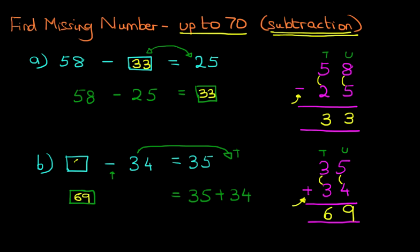And we can write this in our original question. 69 minus 34 equals 35. Now, it really is that simple. Finding the missing number for numbers up to 70 with subtraction questions.